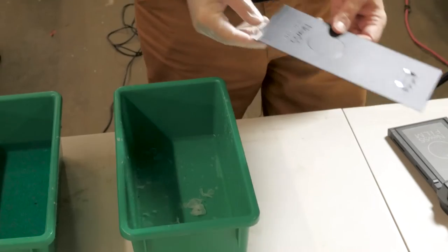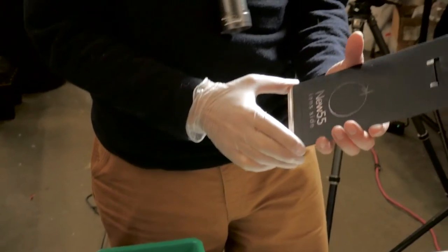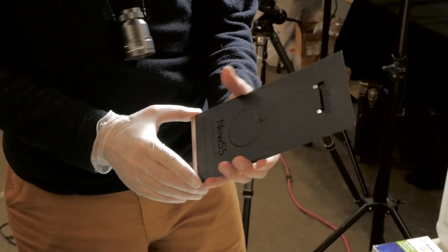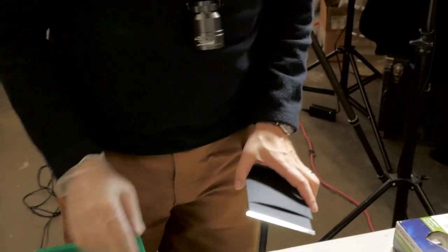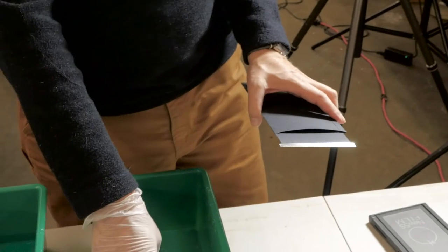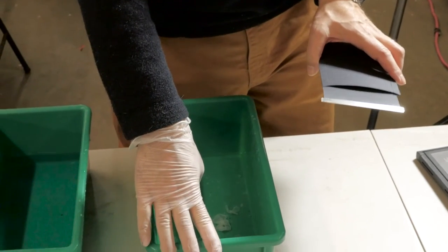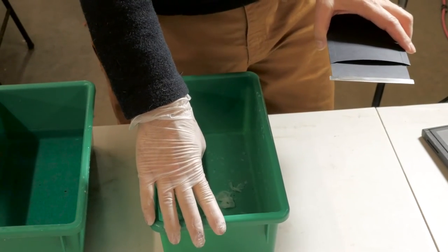When the processing time is up, I remove the tongue assembly from the sleeve. I have my fixer tray with 50% water, 50% Ilford rapid fixer. We insist upon that.